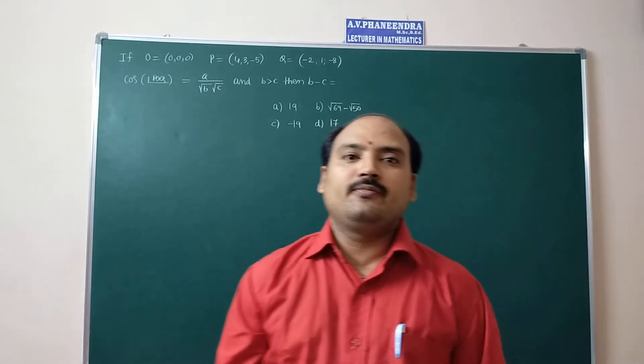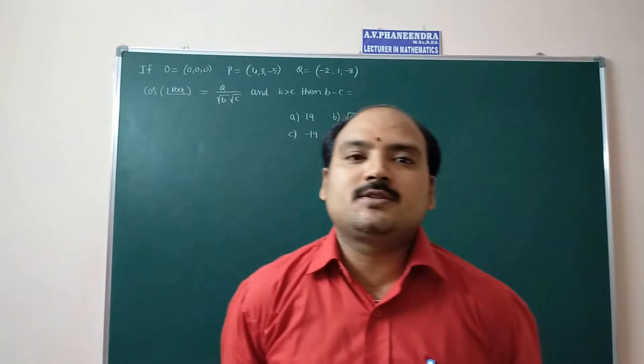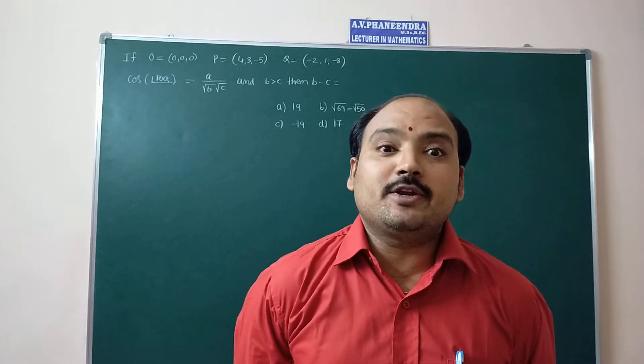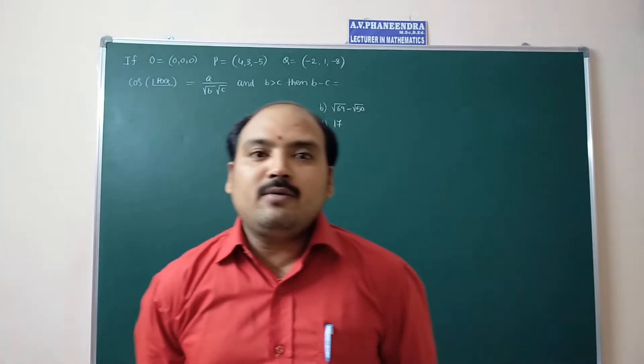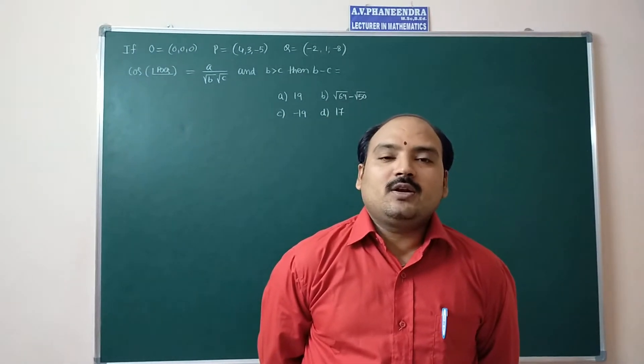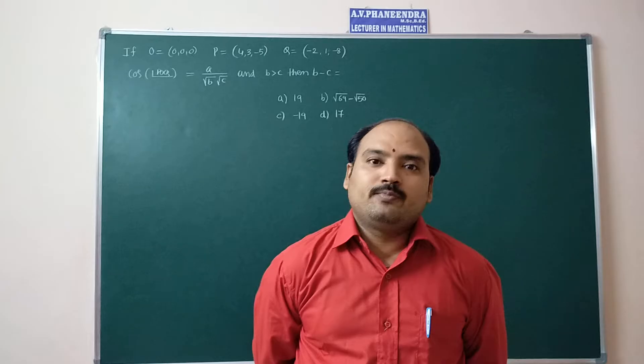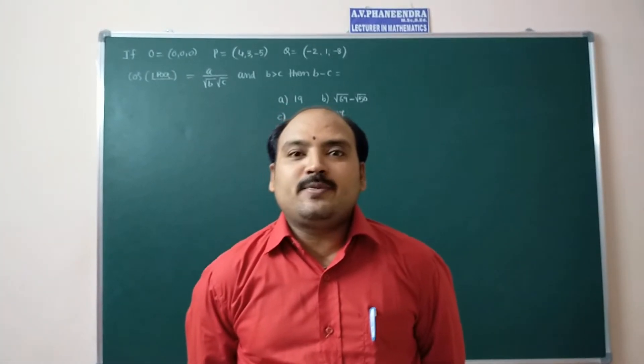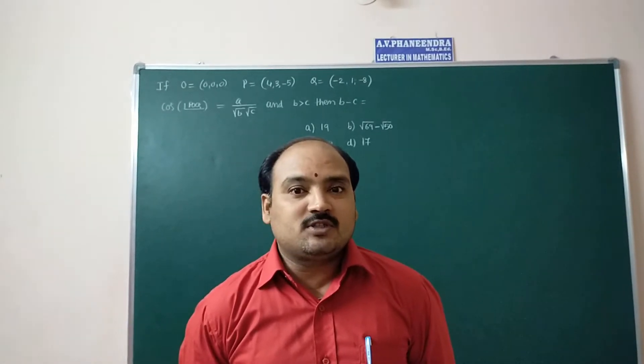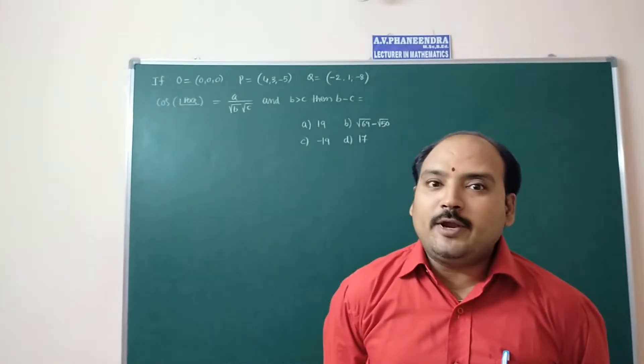Hi students, welcome to my channel. In this video I am going to discuss the angle between two lines whose direction ratios are a1, b1, c1 and a2, b2, c2. Then cos theta equals mod of a1a2 plus b1b2 plus c1c2 divided by root of a1 square plus b1 square plus c1 square into root of a2 square plus b2 square plus c2 square.